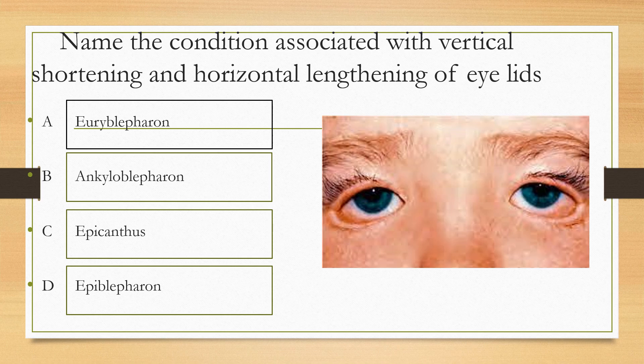Name the condition associated with vertical shortening and horizontal lengthening of eyelids. The condition is termed as: option A euryblepharon, option B ankyloblepharon, option C epicanthus, option D epiblepharon. The condition has been depicted here. The answer is option A, euryblepharon.